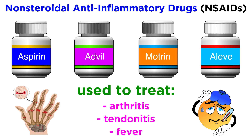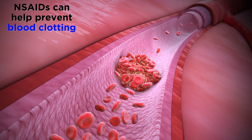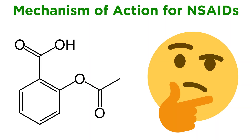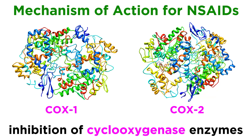This makes these drugs popular options in the treatment of inflammatory diseases like arthritis or tendonitis, and also to lower fever. In addition, at low doses, NSAIDs can prevent clotting of the blood, making them important treatments for people with cardiac disease. So how exactly do NSAIDs achieve these results? They work by inhibiting the function of two enzymes, cyclooxygenase 1 and 2, or COX-1 and COX-2 for short.